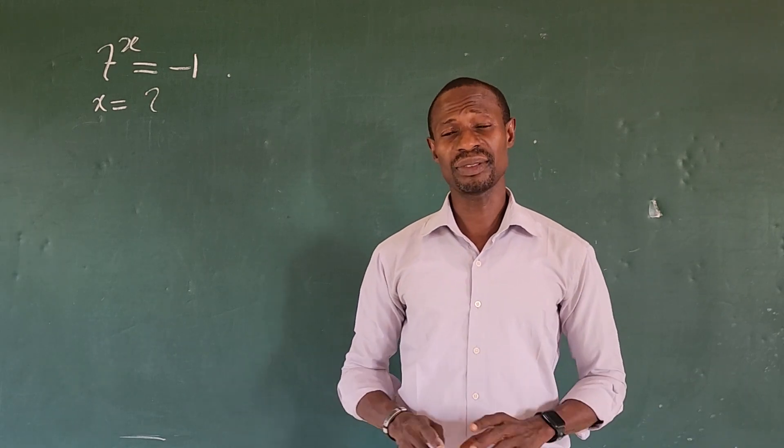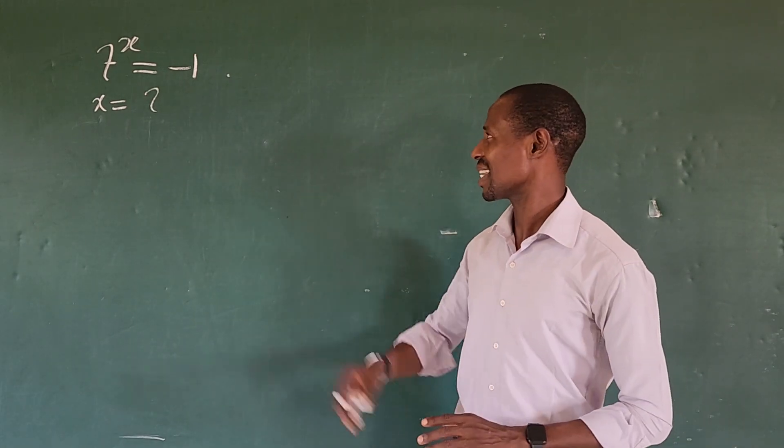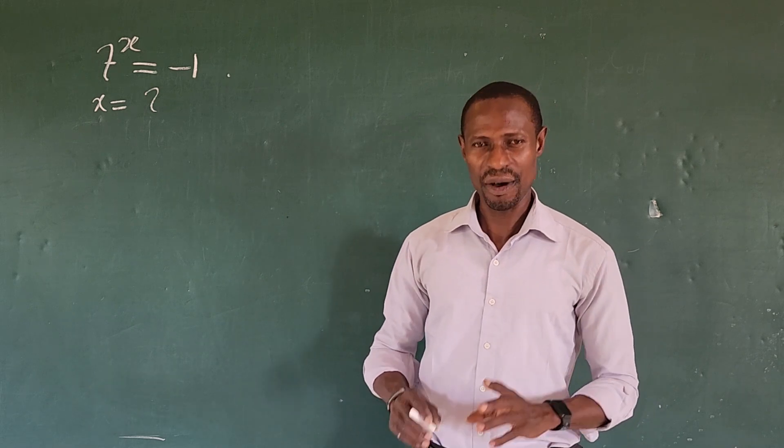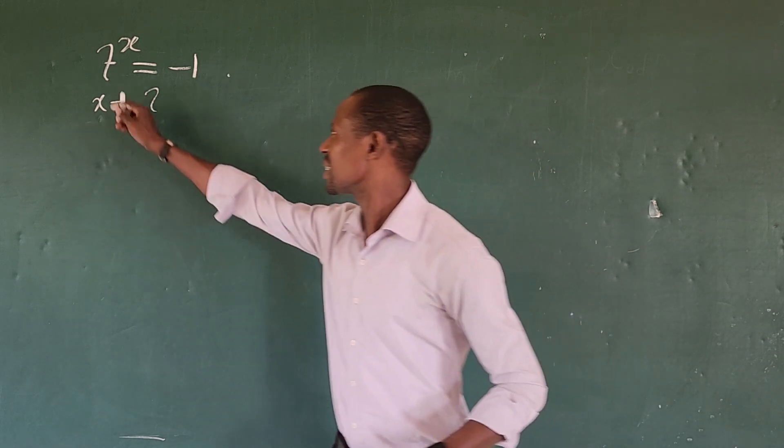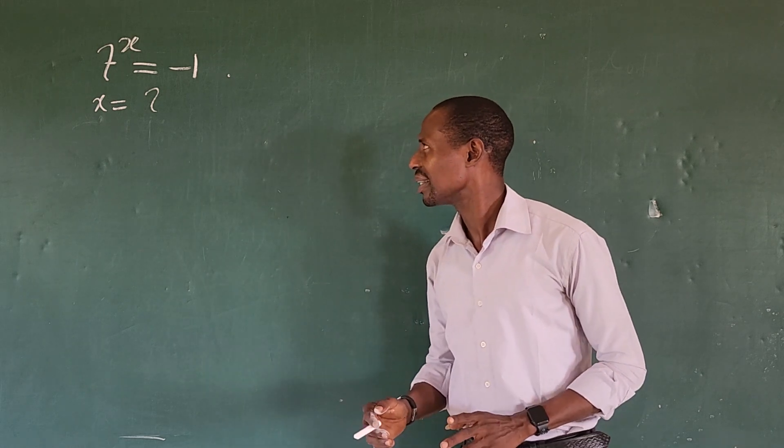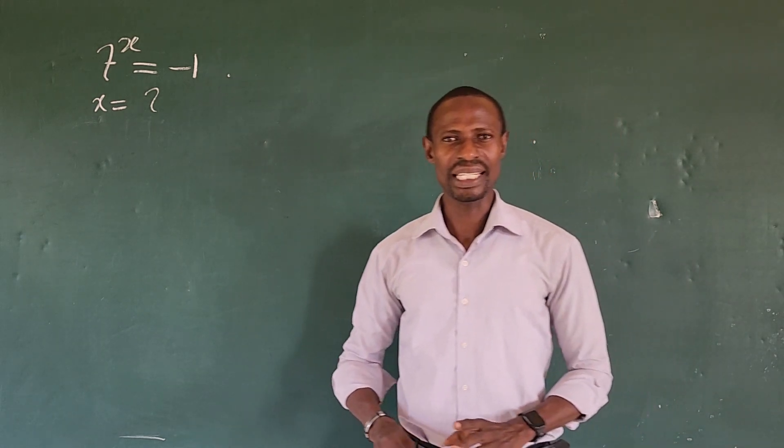Hello everyone, welcome to today's challenge. Today we have a very nice exponential problem on the board. The question is 7 to the power of x equal to minus 1. What would be the possible value of x?